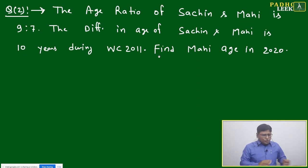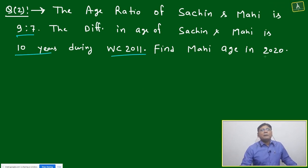The question is: The age ratio of Sachin and Mahi is 9:7. The difference in age of Sachin and Mahi is 10 years during World Cup 2011. Find Mahi's age in 2020.